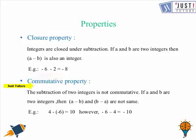Let's come to the next one which is commutative property. So the subtraction of two integers is not commutative. That means if a and b are two integers, then a minus b and b minus a are not the same. Let's choose two integers for a and b. Let's say a is 4 and b is minus 6. So 4 take away minus 6 is 10. However, minus 6 take away 4 is minus 10. So the integers are not closed under commutative property.